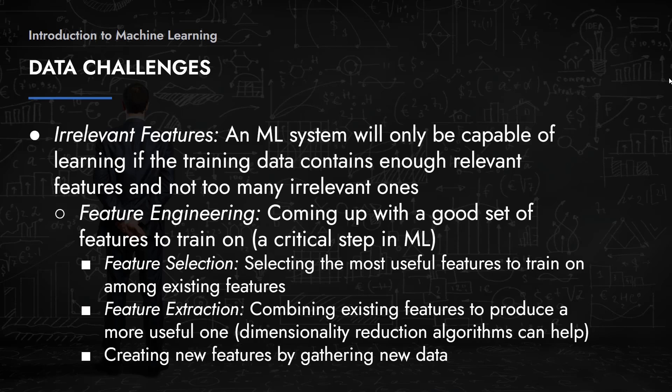Let's say we want to predict the price of a car and we're given the model, age, and mileage. We also think the company that manufactured the car would be important for predicting the price, but it's not included in the data. However, since we know the model of the car, we can search the models individually, find the companies those models belong to, and include that as a new column in the data. That's an example of creating new features by gathering new data.